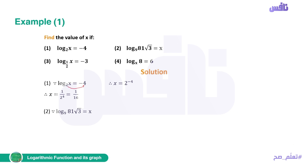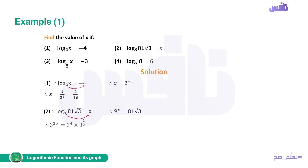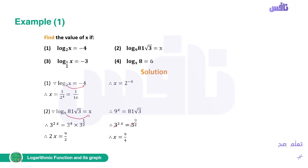Number 2: log base 9 of (81 times the square root of 3) equals x. We convert: 9 to the power of x equals 81 times root 3. Writing 9 as 3 squared gives 3 to the power of 2x. On the right side, 81 is 3 to the 4th and root 3 is 3 to the 1/2, so the right side becomes 3 to the power of 9/2. Since the bases are equal, 2x equals 9/2, therefore x equals 9/4.